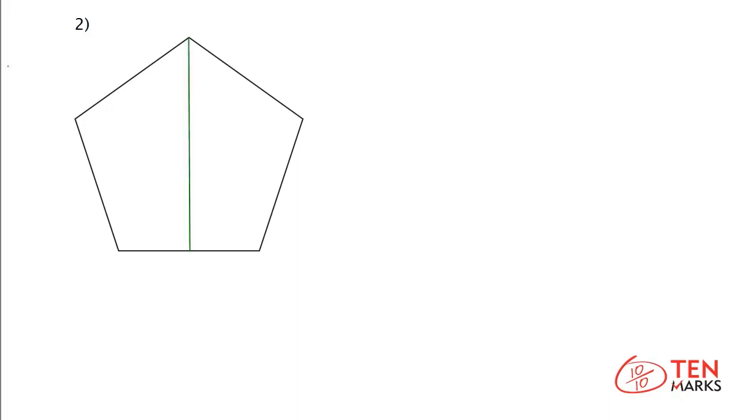You will get identical halves. This figure has line symmetry. You can do this starting at any of the five vertices and going to the opposite side. There are five lines of symmetry.